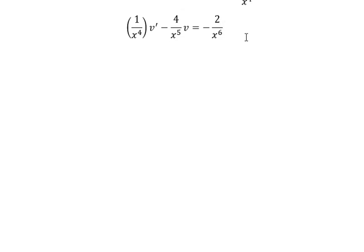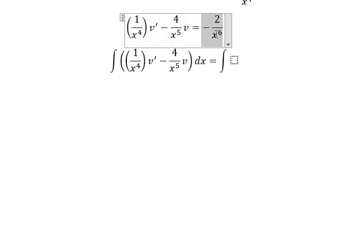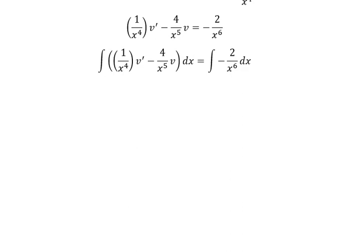Now we put the integral in both sides. On the left, we got V over x to the power of 4. On the right, we have negative 2 over x to the power of 6 dx. So you got 2 over 5 x to the power of 5 plus C. Then we multiply both sides with x to the power of 4.